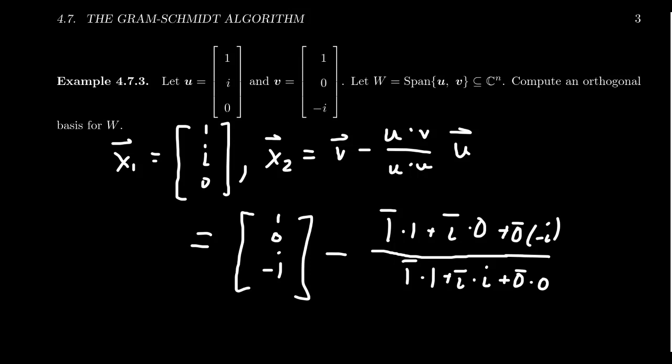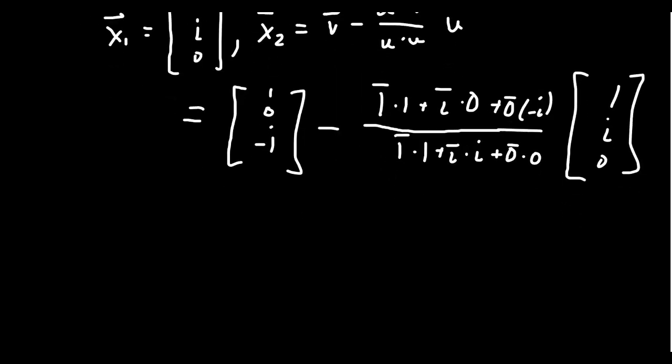the bar is just the complex conjugate. So we're going to take the conjugate of the second one, i, and 0, like so. Now there's a lot of 0s here, so this does simplify simple enough. 1, 0, negative i.